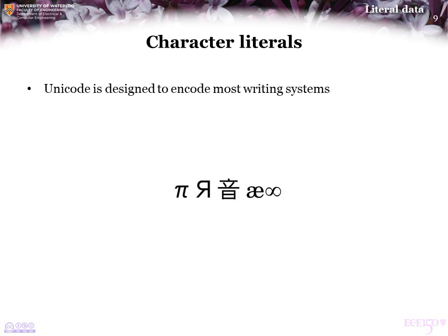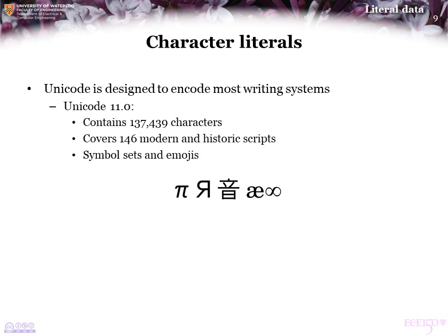Unicode, on the other hand, is designed to encode most writing systems today, except for Tolkien's. Unicode 11.0 contains well over 100,000 characters, covers 146 modern and historic scripts, and also includes symbol sets such as mathematical symbols and emojis. However, Unicode is significantly beyond the scope of this course, though you're welcome to look into it on your own.